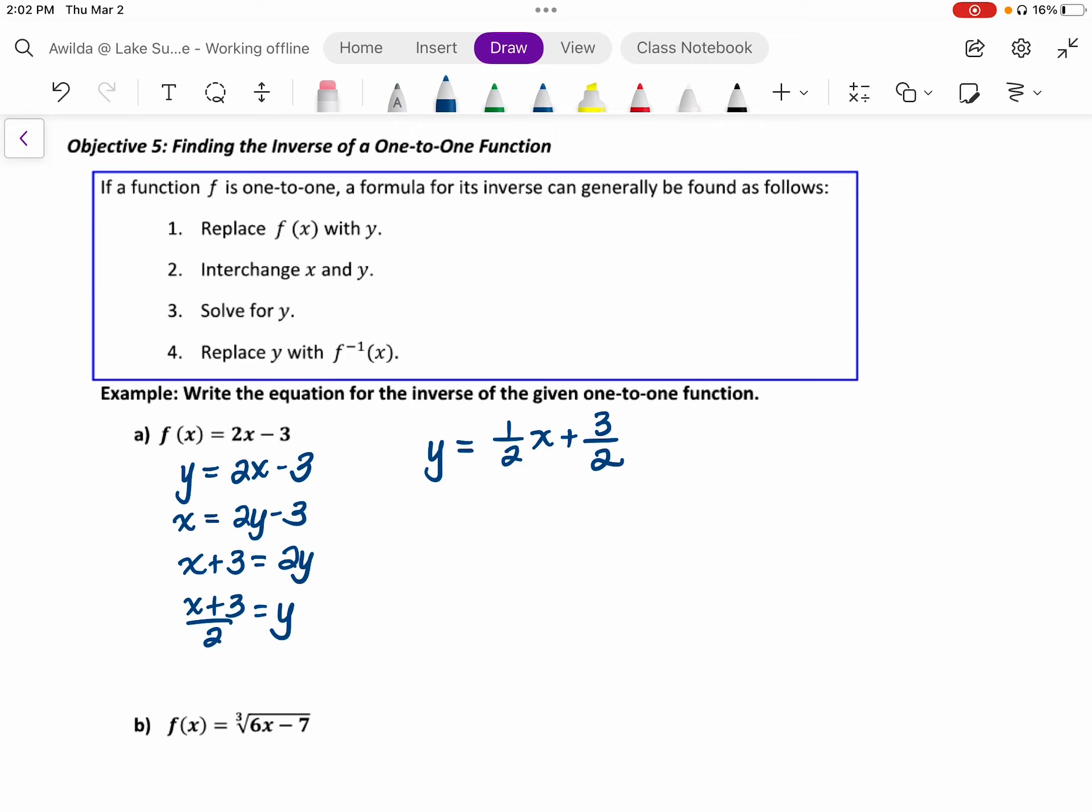This is the equation of a line written in slope intercept form. Finally, I'm going to replace y with the new f inverse notation. The original line had a positive slope of 2. Its inverse is going to have a slope of 1 half. I encourage you to take time to graph these two lines to see that they are reflections of each other across the y equals x line.